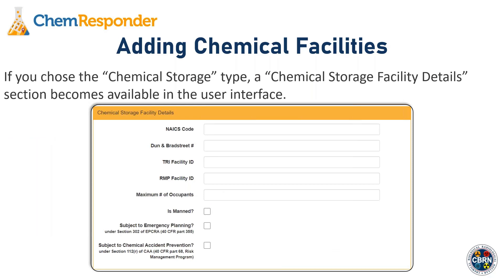As you proceed down the form, you'll come to the Chemical Storage Facility Details section. This section will only appear if you chose the Chemical Storage type. Here you can supply things like facility identifiers, a TRI or RMP facility ID, maximum number of occupants, and other fields available to you here.